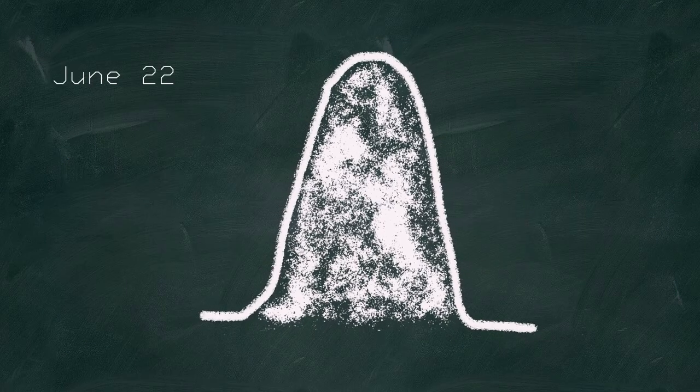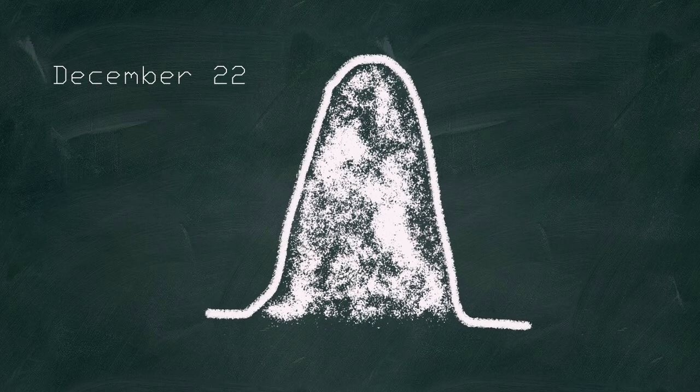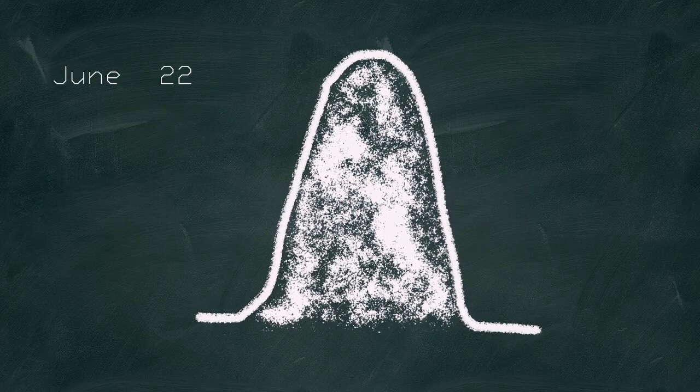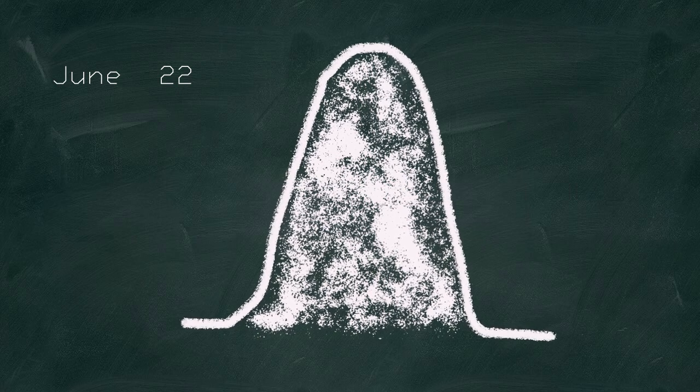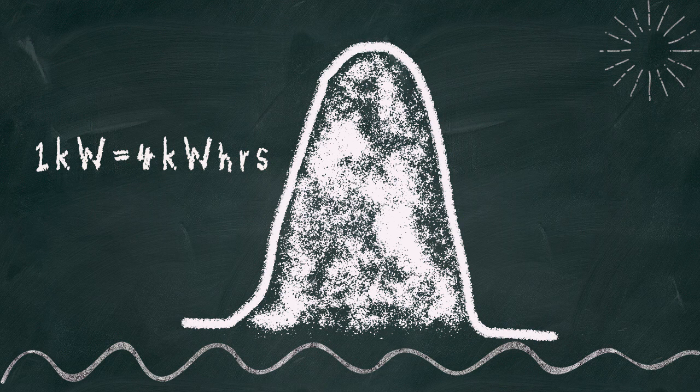When you graph a panel's output, it is a bell-shaped curve that seasonally changes in amplitude and width. The area under the curve is the power output. On average, for each kilowatt of installed panels, you'll get 4 kilowatt hours of power on a daily basis. 10 kilowatts installed, 40 kilowatt hours of solar power generated.